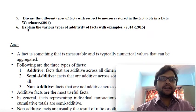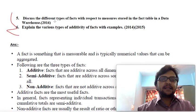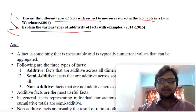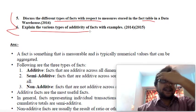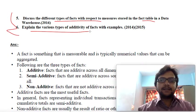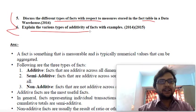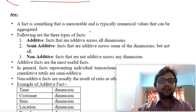In the previous lecture, we discussed the first four questions from 2014, 2015, and 2016 papers. Now we'll discuss two questions: the different types of facts with respect to measures stored in a fact table in a data warehouse, and various types of additivity of facts with examples. Facts are numbers or measures — for example, what percentage of TY BACIT semester 6 students cleared their exams this year.